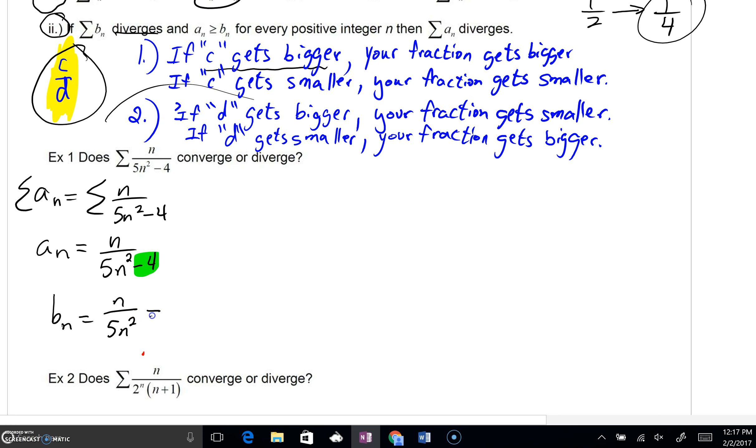But this could divide out, and you can say this is really just 1 all over 5n. B sub n would be 1 over 5n, and we can say that b sub n is actually going to be smaller than a sub n.